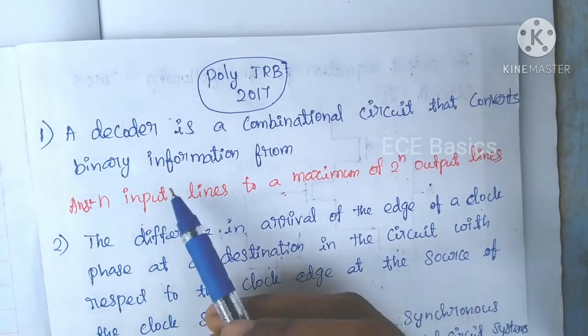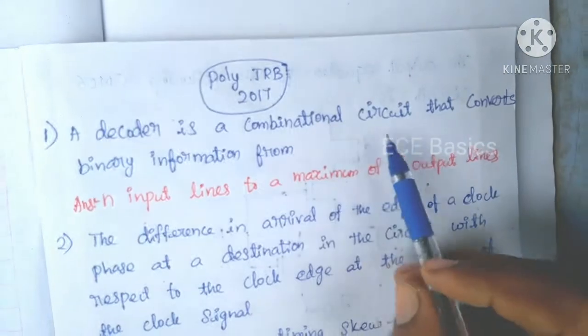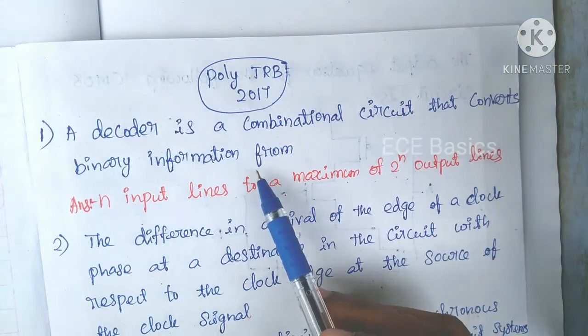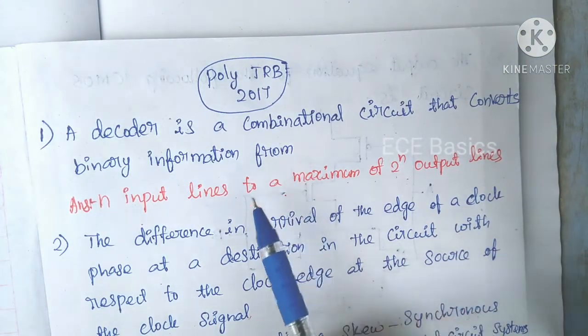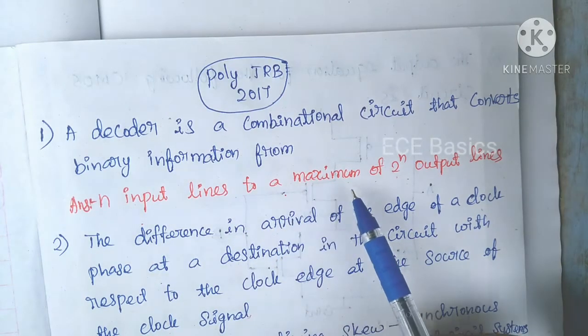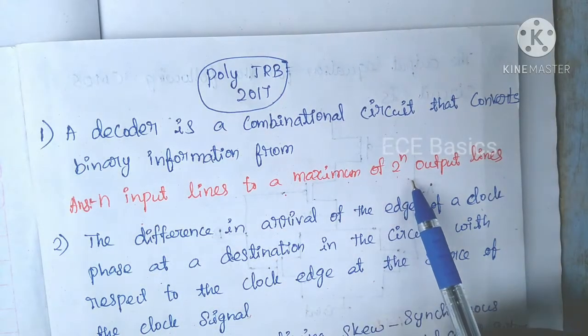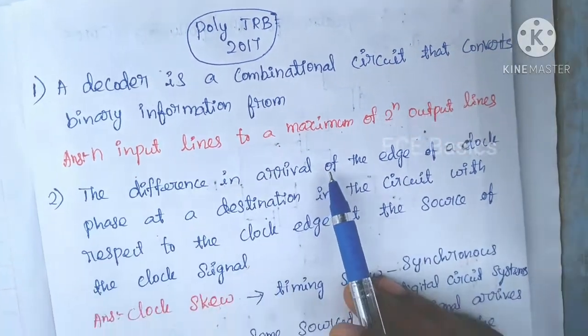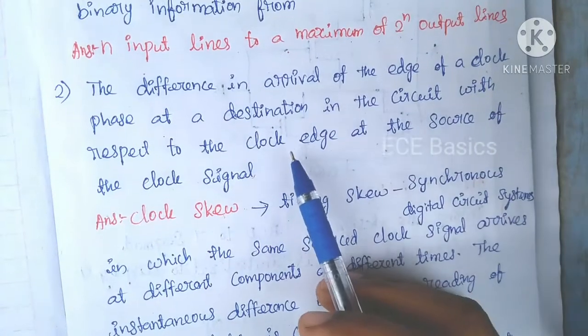First question: A decoder is a combinational circuit that converts binary information from n input lines to a maximum number of 2 to the power of n output lines.